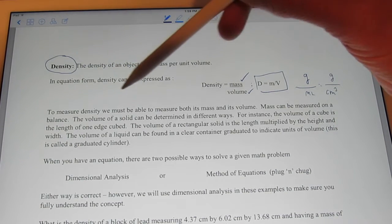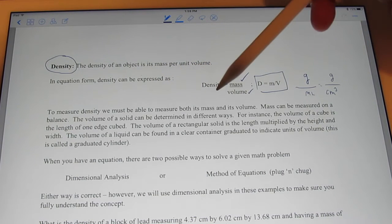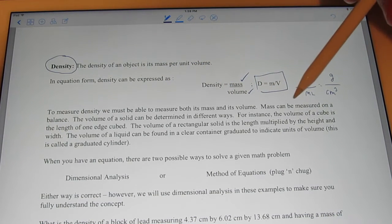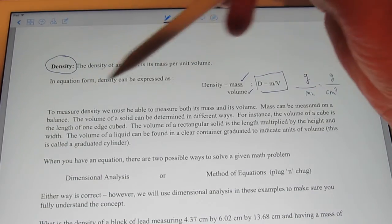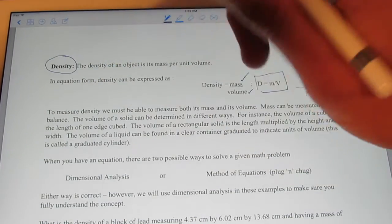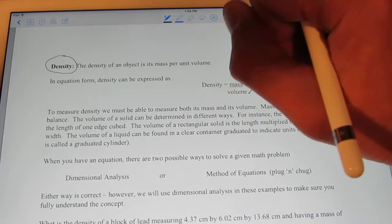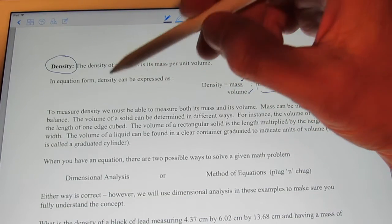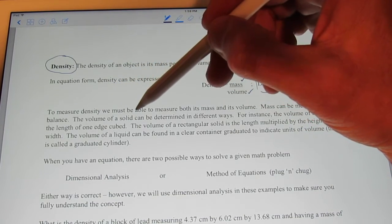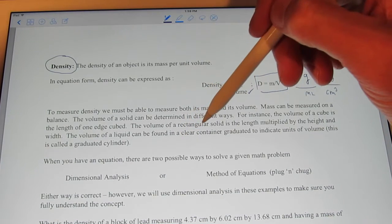So to measure density, we have to be able to measure mass and volume. Mass can be measured on a balance. Pretty easy to do. Take the object, put it on the balance, and we can read the digital display. It will tell us the object's mass. However, the volume of a solid, we can figure out a few different ways.